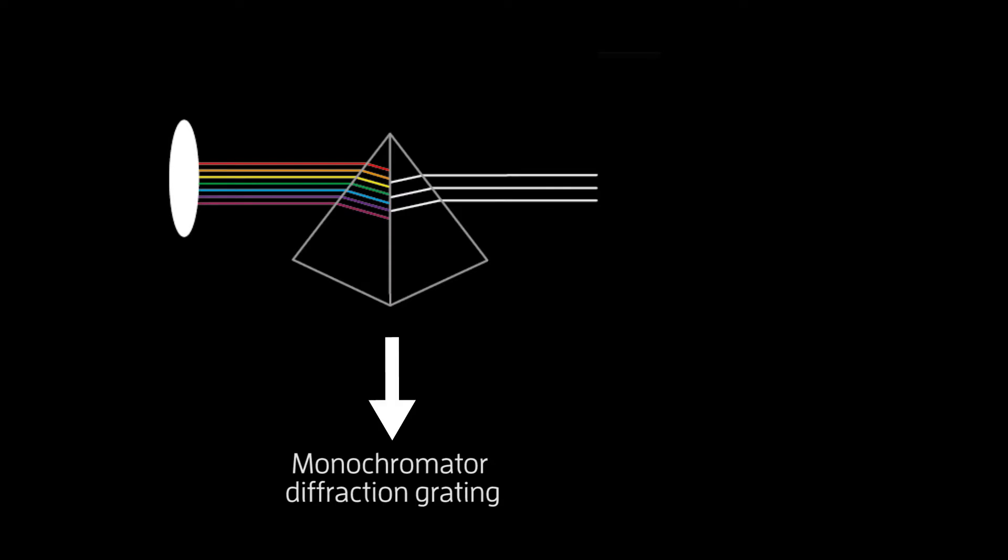Secondly we have a monochromata diffraction grating. This works like a prism and separates the light from the emission source into its component wavelengths. The grating rotates such that only the operator specified wavelengths reach the exit slit and the sample behind it.